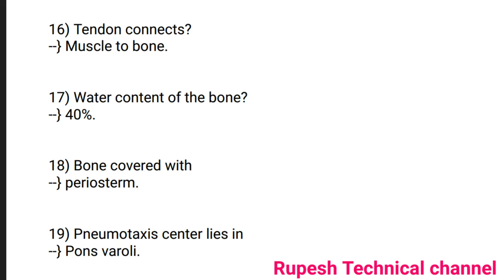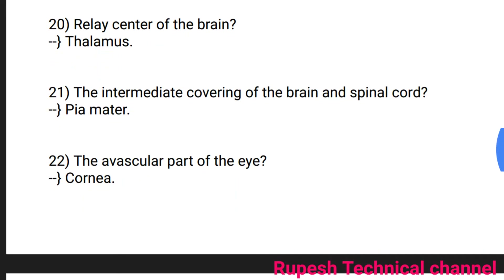Question number 19: Pneumotaxic center lies in the pons. Question number 20: Relay center of the brain is the thalamus. Question number 21: The intermediate covering of the brain and spinal cord is the pia mater.